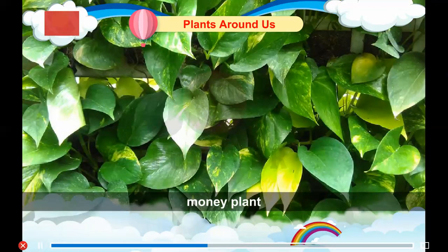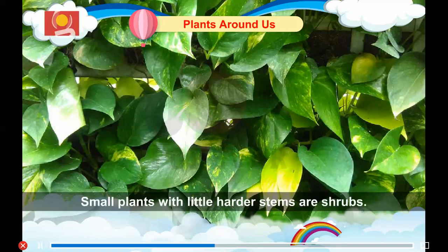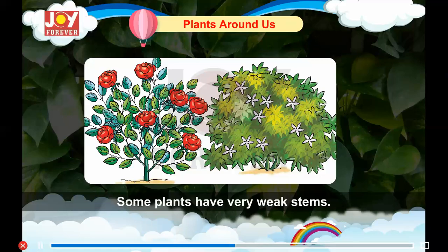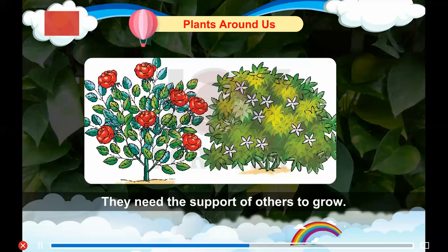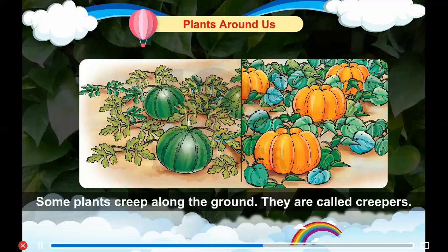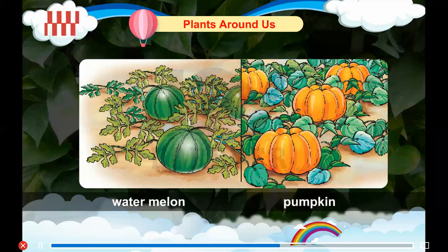Money plant, grapevine — small plants with little harder stems are shrubs. Rose, Jasmine. Some plants have very weak stems. They need the support of others to grow. They are called climbers. Some plants creep along the ground. They are called creepers.